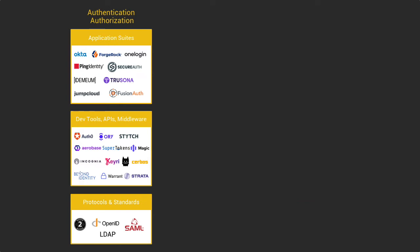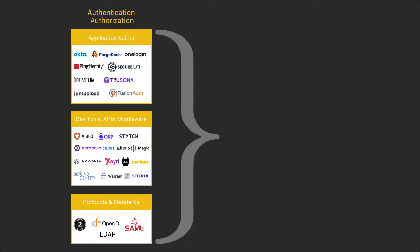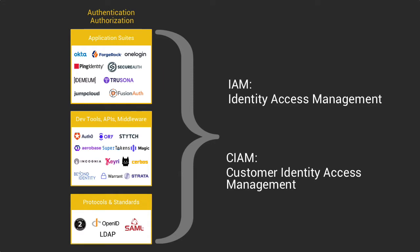First, on the B2B side, we have the authentication and authorization block, which includes the products that enable a company to create and manage everything around how employees and customers access applications securely — from single sign-on systems for employees to active directory management or customer account management. It's the territory of multi-billion dollar companies such as Okta or OneLogin.